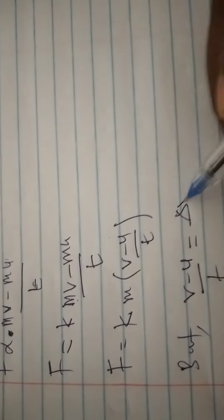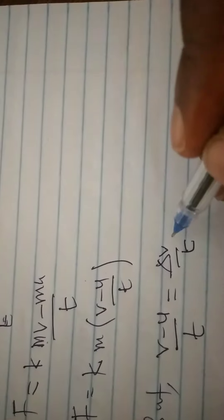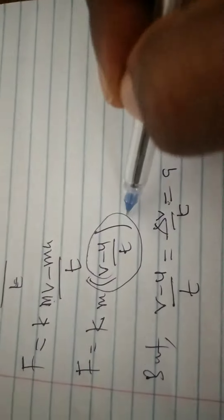But we all know that v minus u all over t is the same as change in velocity over time, and change in velocity over time is equal to acceleration. So we can come and substitute this into this equation.